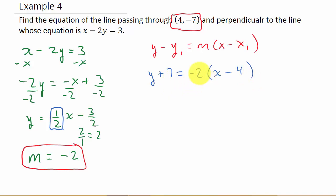Alright and then we solve it for y. So we'll distribute the negative 2. Y plus 7 equals negative 2x plus 8. Subtract 7 to both sides. I get y equals negative 2x plus 1. And that's your answer.